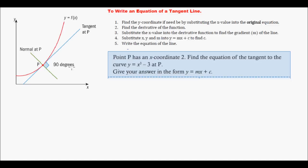To find the equation of a tangent line, you find the y coordinate if need be by substituting the x value in the original equation, find the derivative, substitute the x value to find m, and then sub x, y, and m into y equals mx plus c, and write down the equation. It seems like a lot of steps, but it's really pretty straightforward. Sometimes I'll give you the whole point - the x and y coordinate - that makes it even easier.